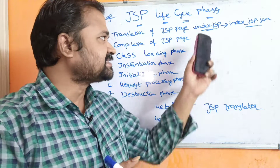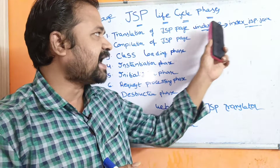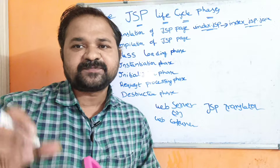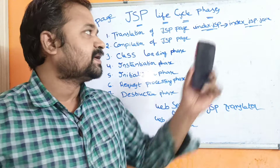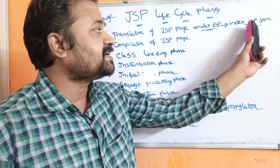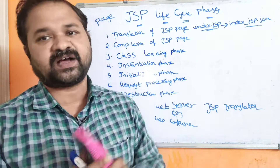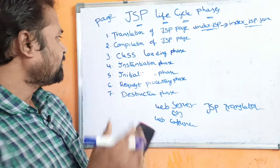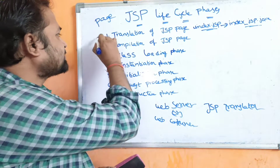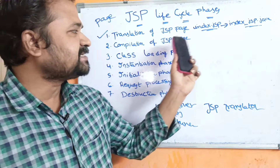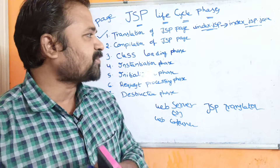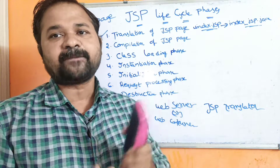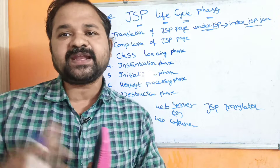Similarly, if the name of the file is YAD.jsp, then YAD.jsp is translated into YAD_JSP.java by the JSP Translator. Now let us see the second phase. The second phase is Compilation of JSP Pages.